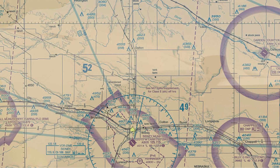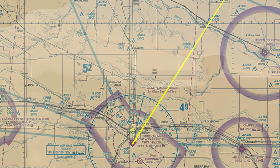Going on to our sectional, we draw a line from the VOR through the 020 point on the compass rose. We're somewhere on this line. If we knew how far we were from the station, we'd know exactly where on the line we are.